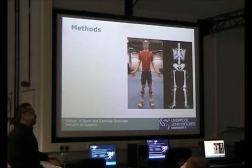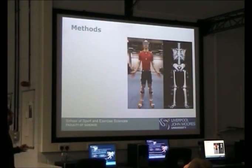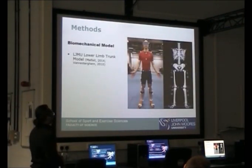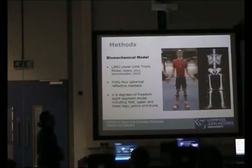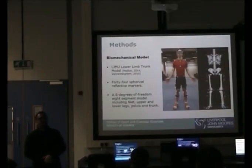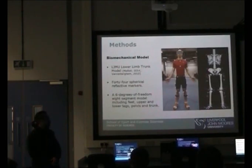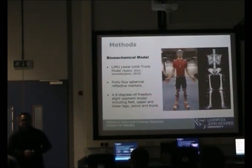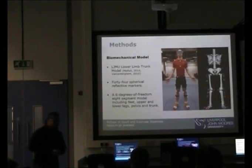We used the lower limb trunk (LLT) model with 44 reflective markers and 60 degrees of freedom, which includes a segment model covering the upper and lower limbs, trunk, pelvis, and foot.